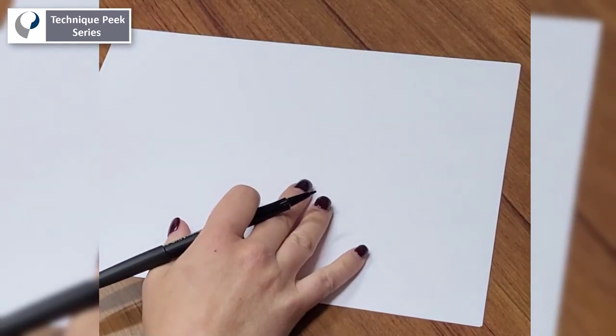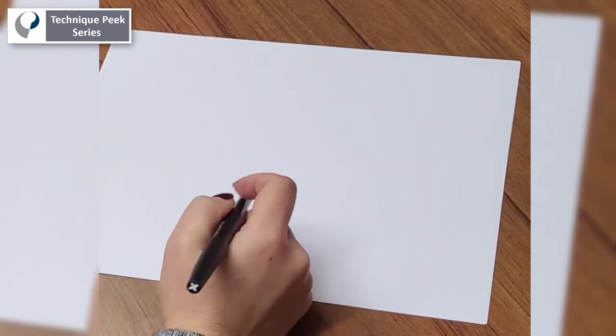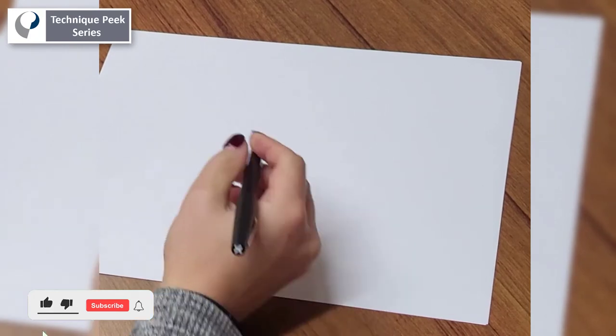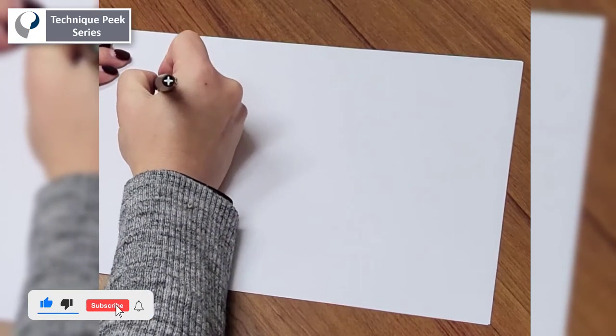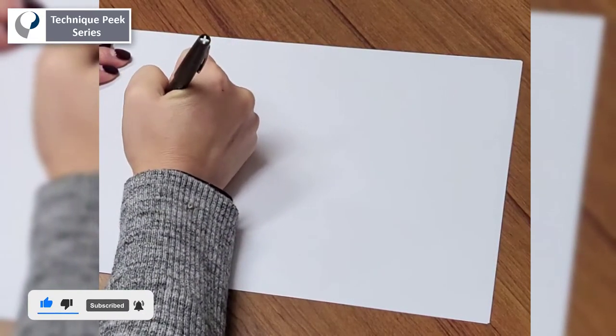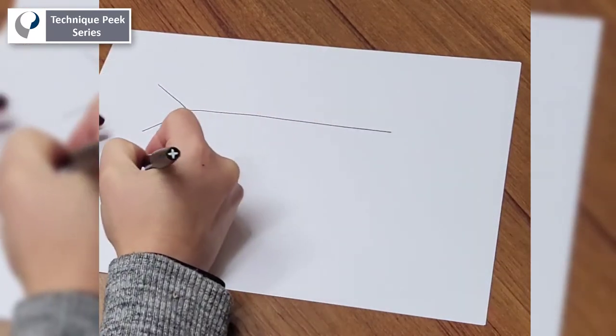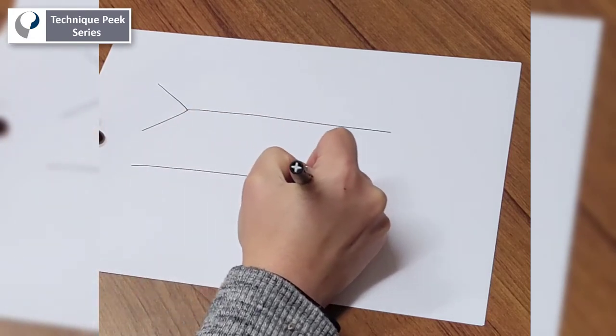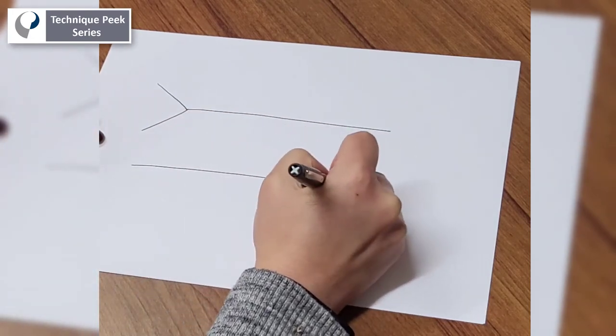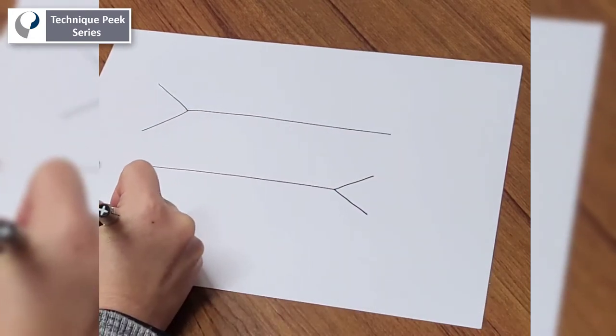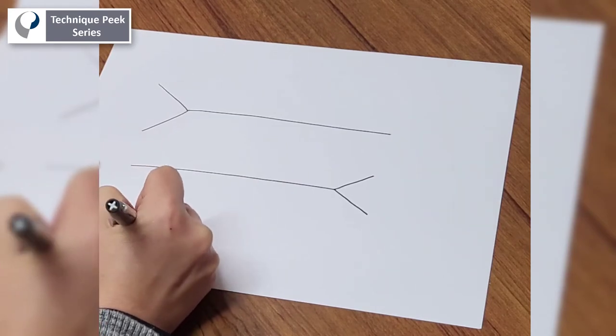So when you're drawing out the brachial plexus, I like to start with the basic shape and then fill in the details. The basic shape starts with two bow and arrow type looking things. The first one is facing in this direction, the second one is facing in the opposite direction, and the last one is facing in the same direction as the first one.